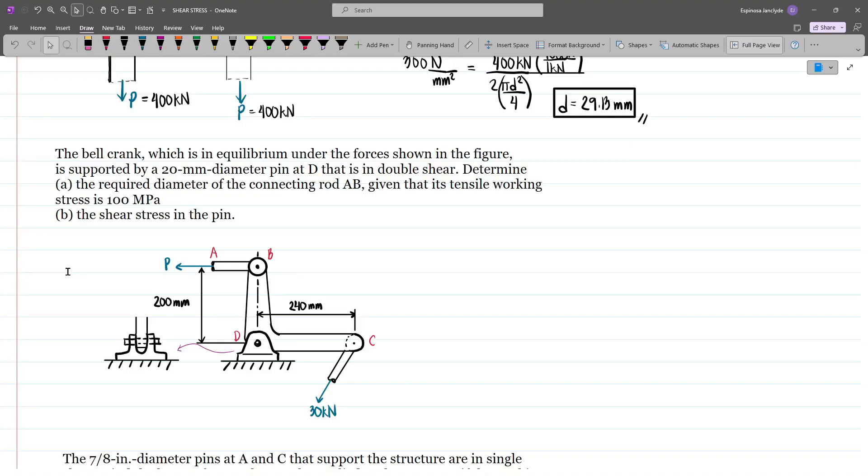For the next problem, we have a bell crank which is in equilibrium under the forces shown in the figure. It is supported by a 20mm diameter pin at D that is in double shear. Determine the required diameter of the connecting rod AB, given that its tensile working stress is 100 MPa.